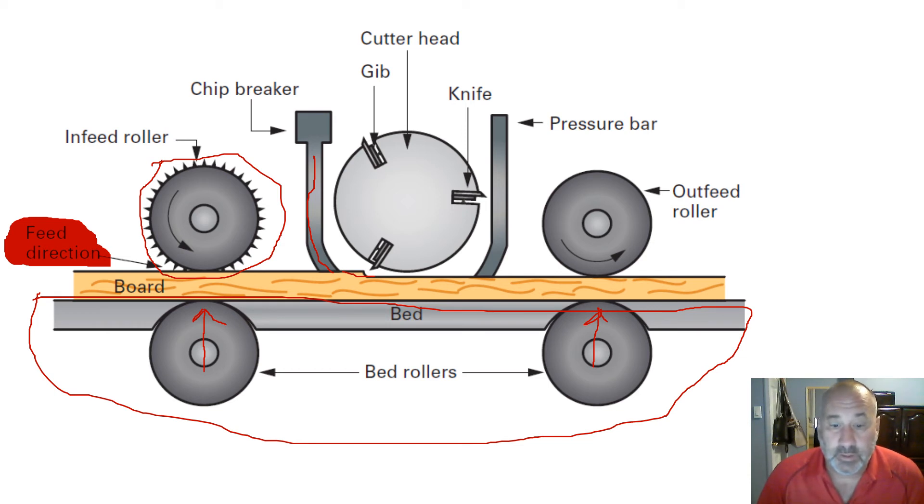Minimum length of piece for the thickness planer is this distance between your outfeed rollers. Anything shorter than that, the piece could disappear into sawdust very quickly. So your piece needs to be held by at least the infeed or the outfeed rollers at any given time. So that is your minimum length.